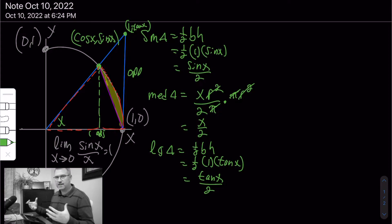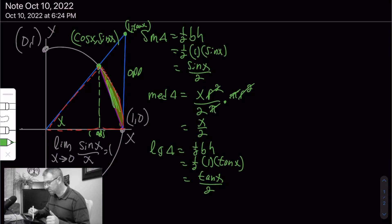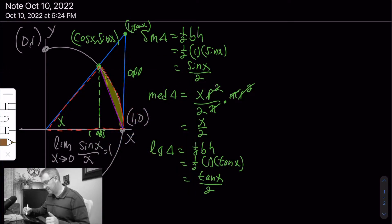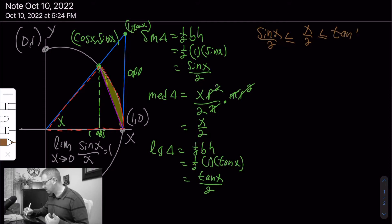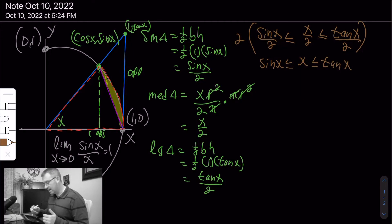By visual observation, the small triangle is clearly smaller than the sector, which is clearly smaller than the large blue triangle. So we state: sine x over 2 ≤ x over 2 ≤ tan x over 2. Multiplying everything by 2 gives: sine x ≤ x ≤ tan x.